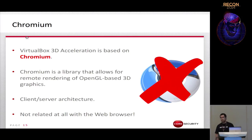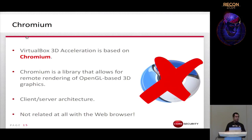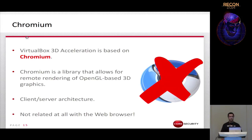VirtualBox uses a library called Chromium to provide 3D acceleration. Chromium is an open source library — not related to the famous web browser — whose purpose is to perform remote rendering of OpenGL 3D graphics. It has a client-server architecture: the Chromium client is an application trying to render OpenGL graphics inside the virtual machine, while the Chromium server runs on the host side in the context of the hypervisor.